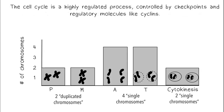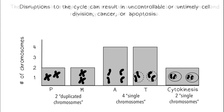The cell cycle is a highly regulated process, controlled by checkpoints and regulatory molecules like cyclins. Disruptions to the cycle can result in uncontrollable or untimely cell division, cancer, or apoptosis.